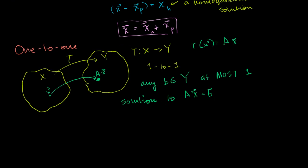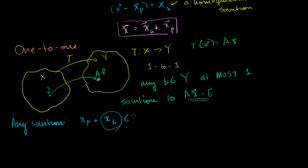We just said that any solution to an inhomogeneous equation, if there is a solution, takes the form x_particular plus a member of your null space. If there isn't a solution, that's fine — that still satisfies 1-to-1. But if there is a solution, any solution takes the form x_particular plus a member of the null space. You can still be 1-to-1 if there are no solutions, but if you do have a solution, you can have at most one.